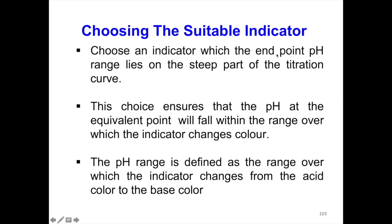Choosing the suitable indicator: choose an indicator whose end point pH range lies on the steep part of the titration curve. Each titration curve has its own steep part. This ensures that the pH at the equivalence point will fall within the range over which the indicator changes color. The pH range is defined as the range over which the indicator changes from the acid color to the base color.